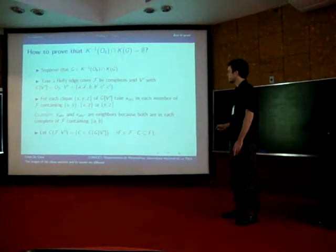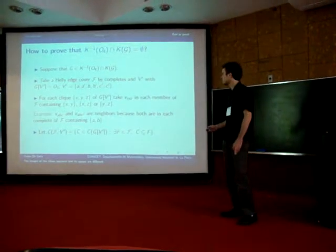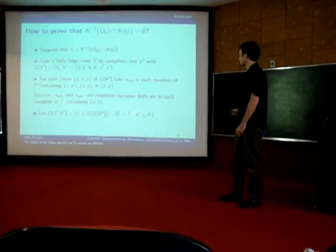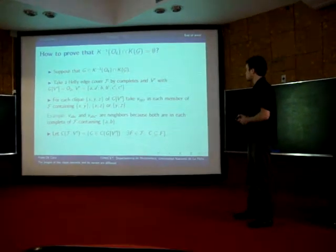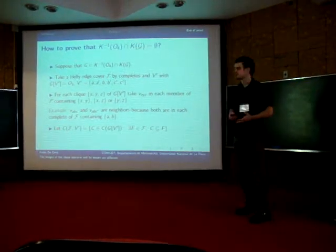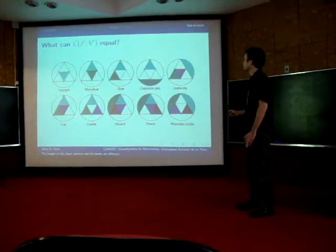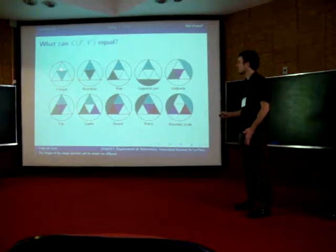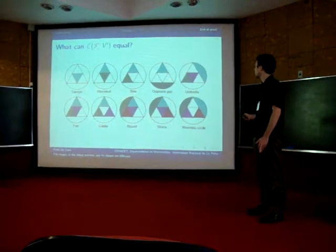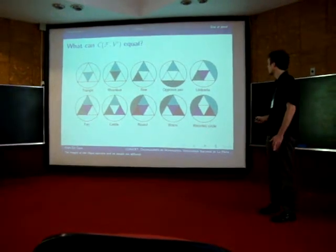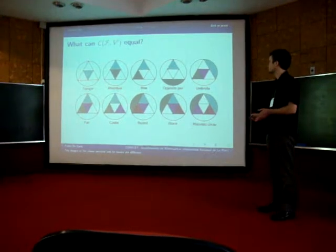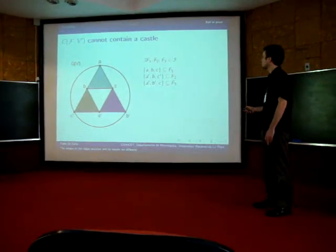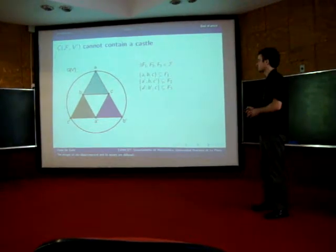Now, we introduce the set C of F, V prime consisting of the cliques of the subgraph O3, such that there exists a member of the family F containing that clique. In principle, there could be many types of sets that C of F, V prime could equal. Here is a picture with many of the cases, for example, a triangle if the set has only one clique, a rhombus, a bowtie, an opposite pair, umbrella, fan, castle, crown, worm, complete circle. And there are some more, for example, sets that contain one castle, one castle and some more cliques.